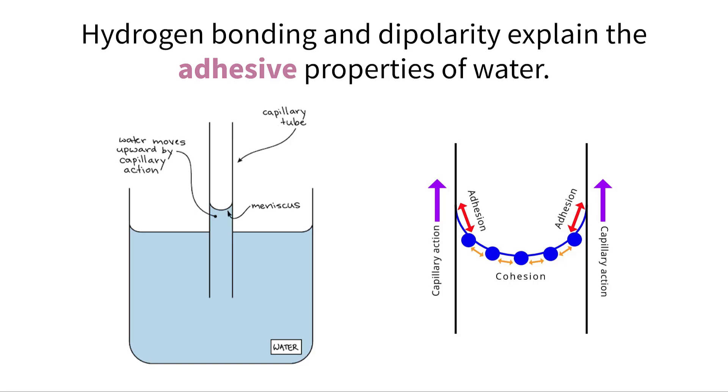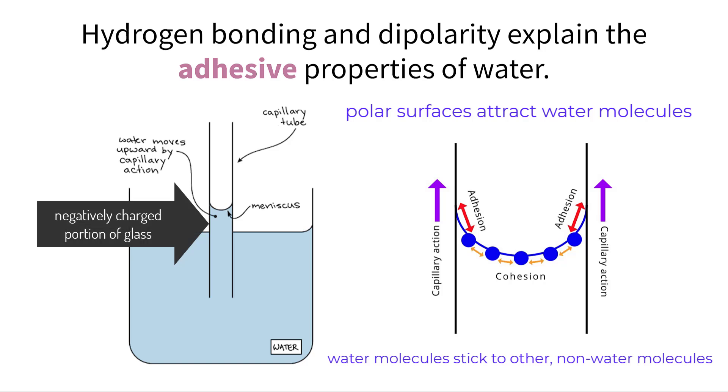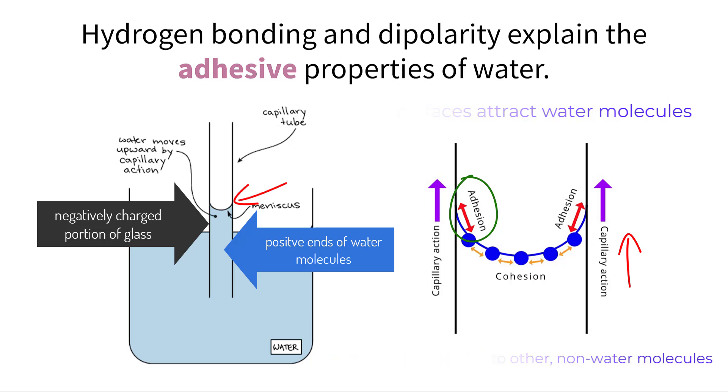Another similar important property of water is adhesion, which describes how water molecules can be attracted to and stick to other surfaces. Just like cohesion, adhesion can be explained by the structure of water molecules and their polarity and hydrogen bonds. Surfaces that are polar or possess charged molecules can attract water molecules, causing them to stick. Glass, for example, is made out of molecules that have charged ends. These negatively charged portions attract the positively charged hydrogen ends of the water molecules. This attraction often makes the water stick to the glass, causing a meniscus to form within a graduated cylinder. This same adhesive property helps pull water molecules up the stem of a plant, which is referred to as capillary action. Adhesion, therefore, is a property that many plants cannot live without.